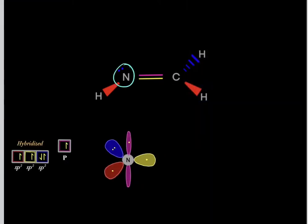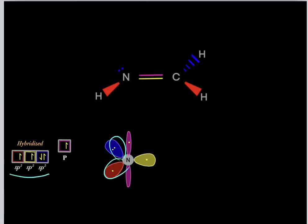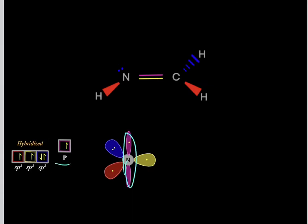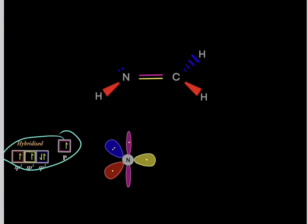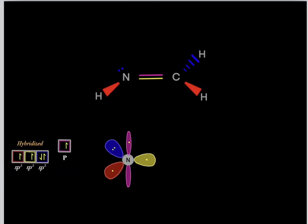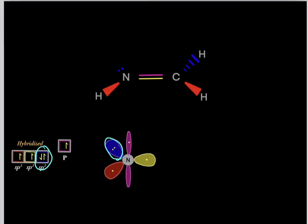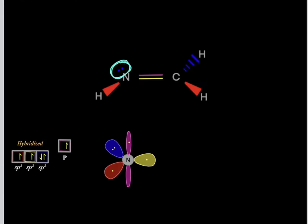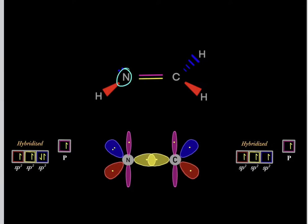What about the nitrogen? It's also sp2-hybridized, so it has three sp2-hybridized orbitals and one unhybridized p-orbital. Nitrogen has five valence electrons, so we split five electrons among these orbitals. One orbital must have two electrons to account for all five. That particular sp2-hybridized orbital with two electrons represents the lone pair of electrons on nitrogen.